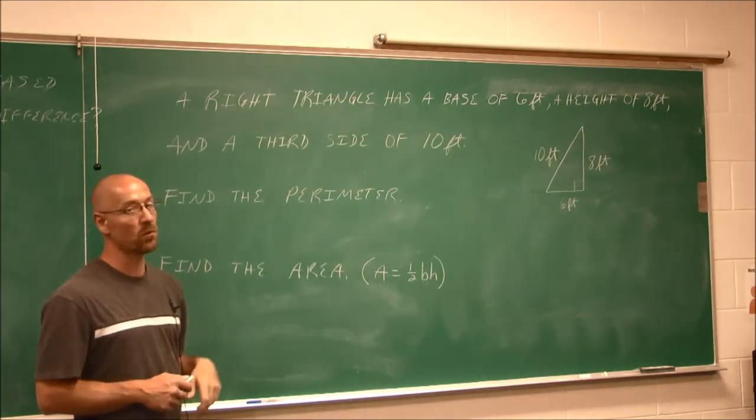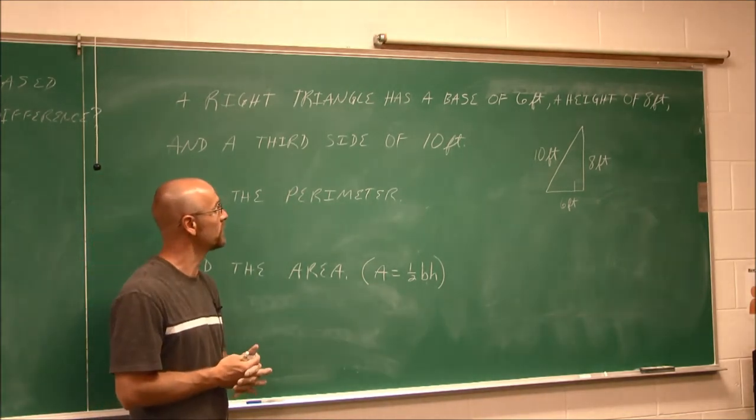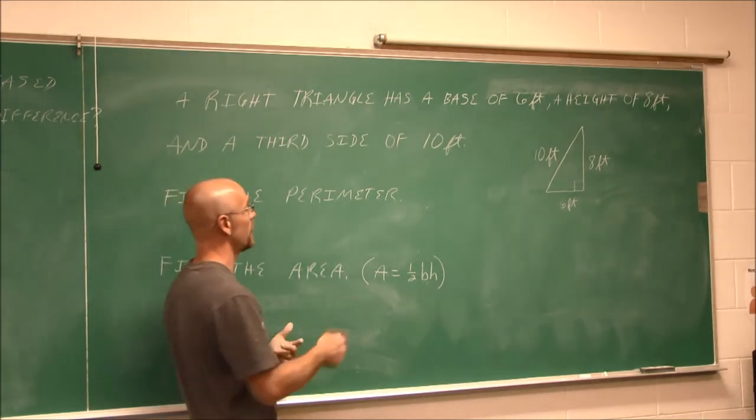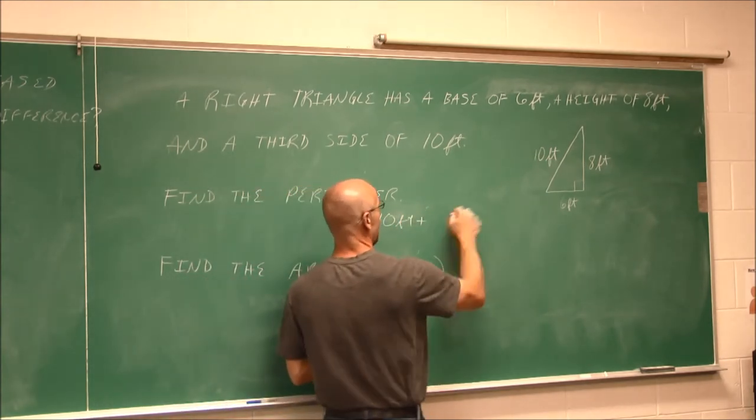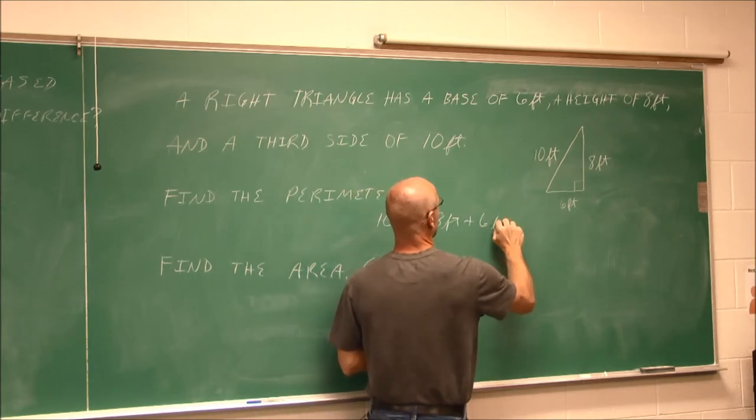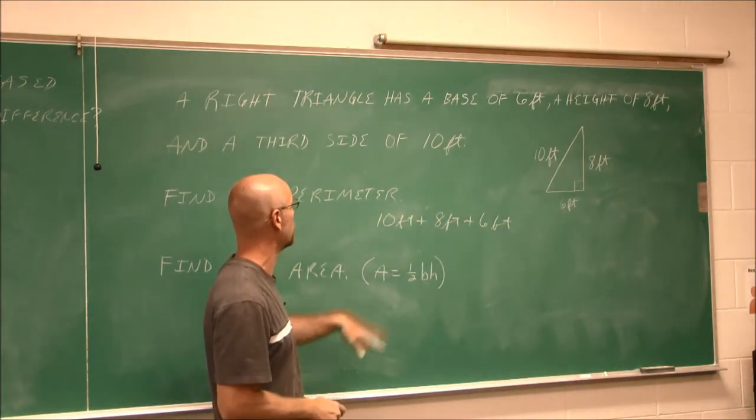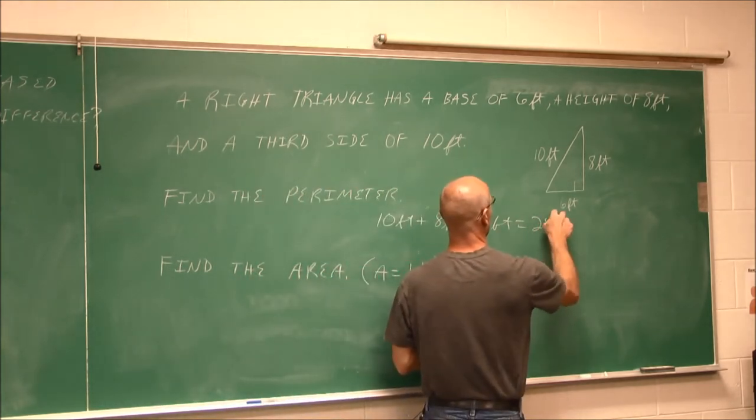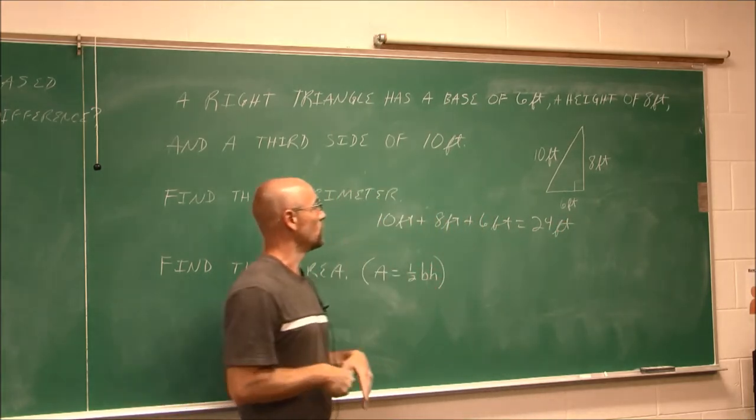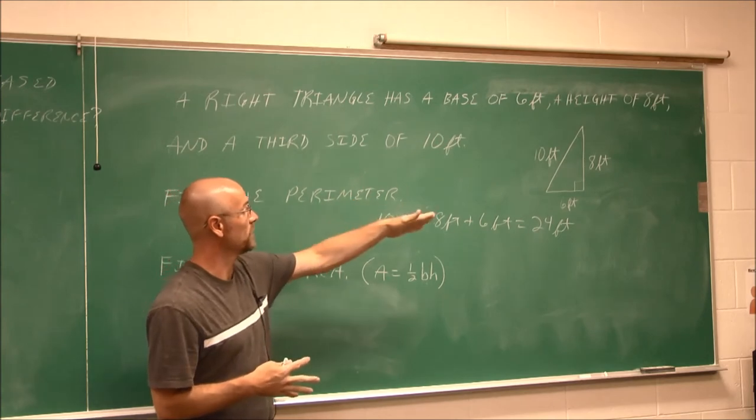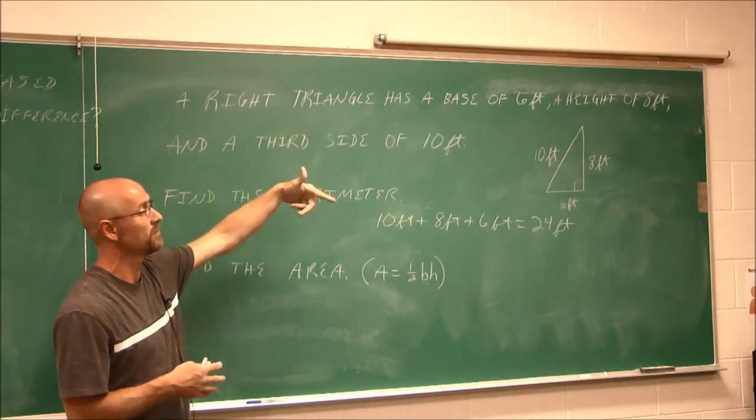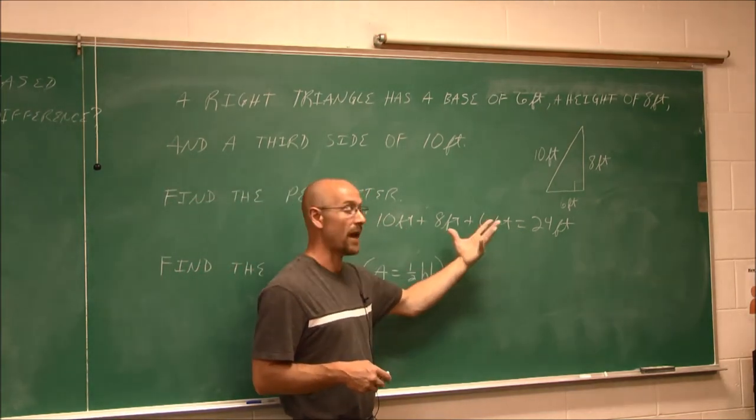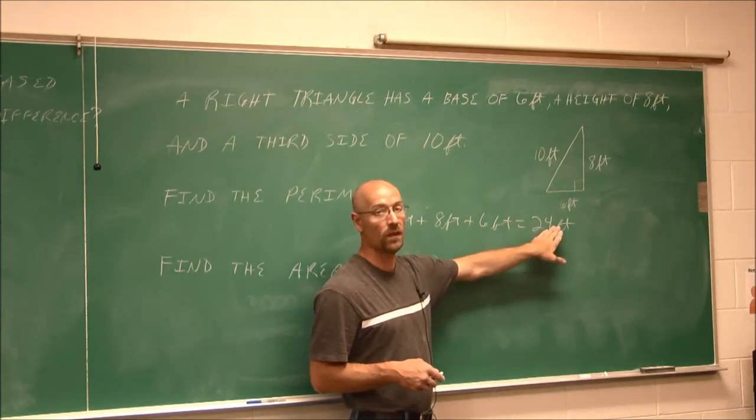So we're asked to find the perimeter. Well, if we recall from previous lectures, if you're watching these videos in order, we know how to find the perimeter. It's the addition of all sides. So I can say 10 feet plus 8 feet plus 6 feet. The distance around is perimeter. 10 and 8 is 18. 18 and 6 is 24 feet. So does this answer the question? Well, the perimeter is the distance around. A triangle has three sides. And I added up all three sides to get 24 feet. Now, notice I kept the units. I'm adding feet. This feet and this feet and this feet give me a total of 24 feet.